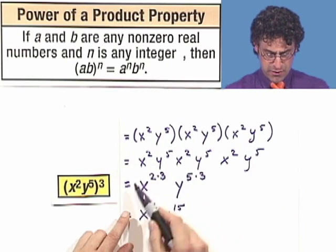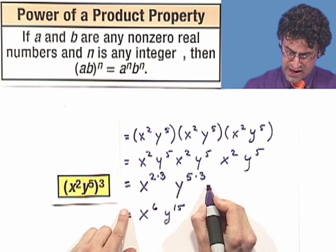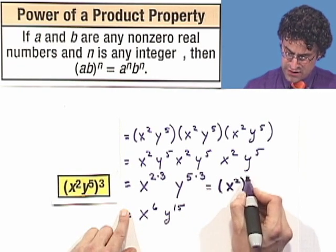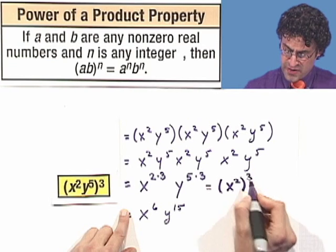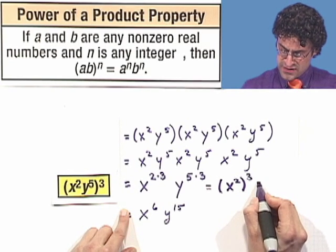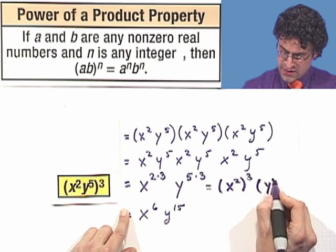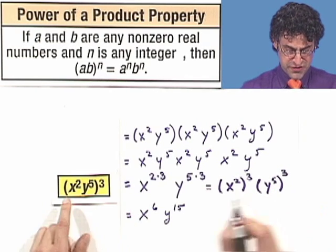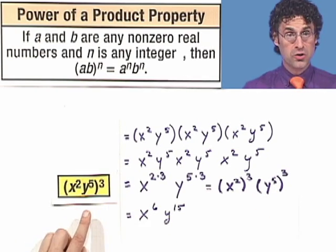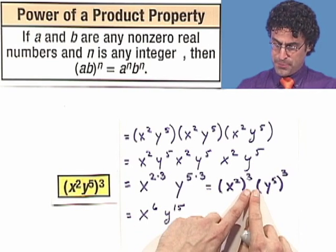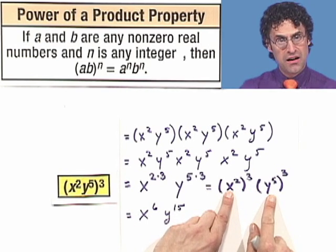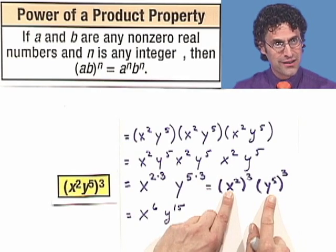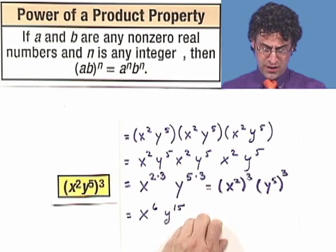That's exactly what we see here. Because this, in fact, equals x squared cubed — by the property we already saw — times y to the fifth cubed. So if I have a product cubed, it actually equals the product of the cubes themselves individually. Weird, but correct, because you can write it all out.